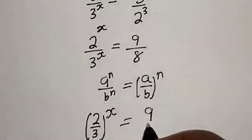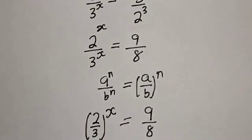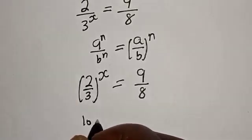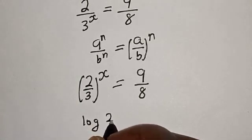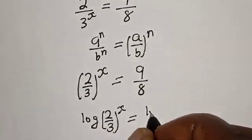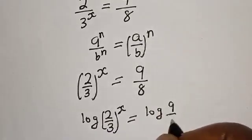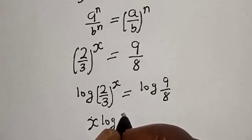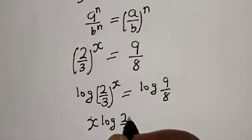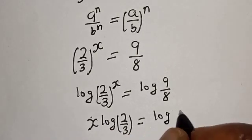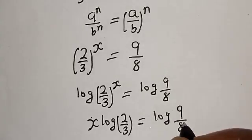This gives us (2 over 3) raised to power x is equal to 9 over 8. Now let's take the log of both sides: log of (2 over 3) to the power of x is equal to log of (9 over 8), which gives x times log(2 over 3) is equal to log(9 over 8).